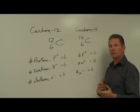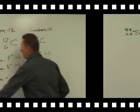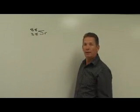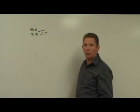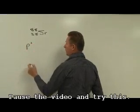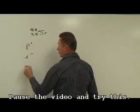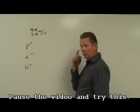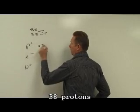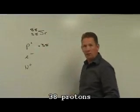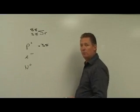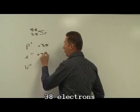Let's shift gears and try some of these on your own. Given the symbol Sr with atomic number 38 and mass number 88, can I identify how many protons, electrons, and neutrons there are? The protons are the easiest — that's number 38, the atomic number. And if it's a neutral atom, the number of electrons is the same as the number of protons, so that's also equal to 38.